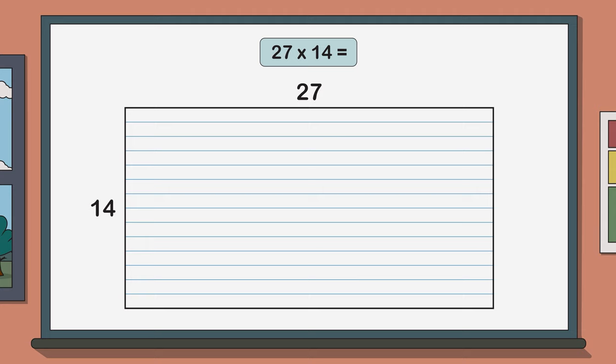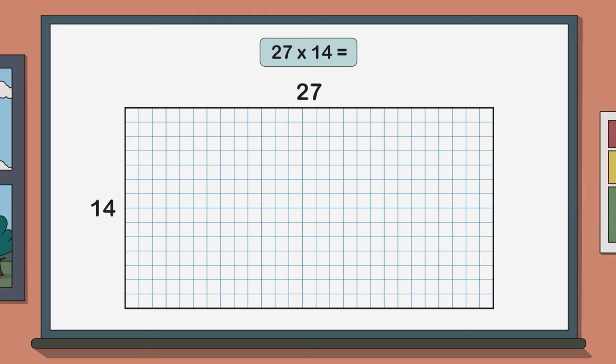Now if we overlap these rows and columns we end up with a grid or an array with lots of squares. Don't worry I'm not expecting you to draw all these grid squares.